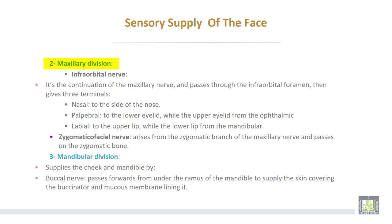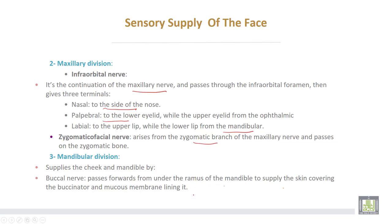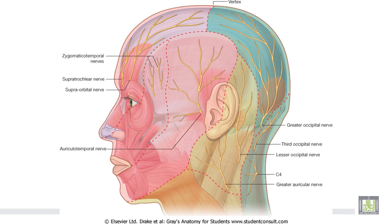The maxillary division continues as the infraorbital nerve, which passes through the infraorbital foramen and gives three branches: nasal to the side of the nose, palpebral to the lower eyelid, and labial to the upper lip, while the lower lip is supplied from the mandibular division. The zygomaticofacial nerve arises from the zygomatic branch of the maxillary and passes to the zygomatic bone. The mandibular division supplies the cheek and mandible by the buccal nerve, which passes forward from under the ramus of the mandible to supply the skin covering the buccinator and the mucous membrane lining it.